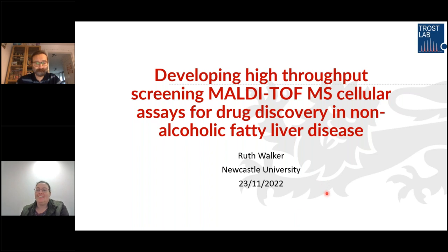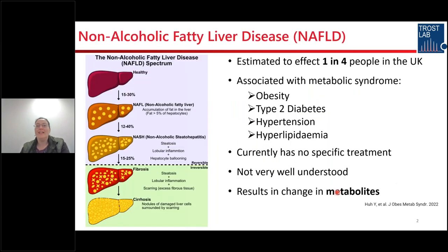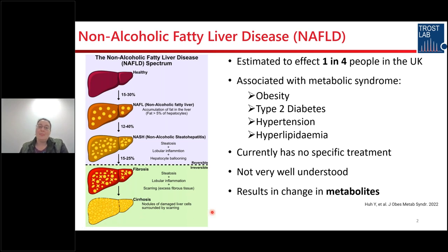Why do I care about non-alcoholic fatty liver disease? NAFLD affects one in four people in the UK and is associated with metabolic syndrome — obesity, type 2 diabetes — which are more prevalent in the Western world. It's a spectrum of disease: from healthy, to accumulation of fats in the liver, then fats plus inflammation, leading to fibrosis, cirrhosis, liver failure, and liver cancer — and if you don't get a transplant, death.